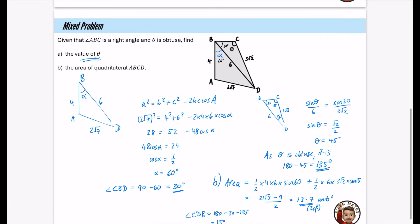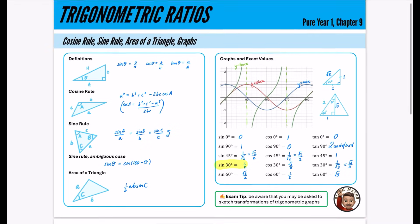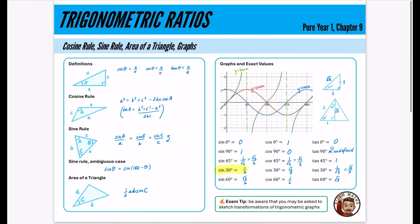So that problem pulled in everything: cosine rule, sine rule, exact values, the ambiguous sine rule case, and area of a triangle — covering all the key things from chapter 9. I'll see you in the next video, which is to do with trigonometric identities and equations.